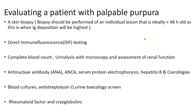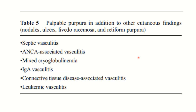To evaluate a patient presenting with palpable purpura: a skin biopsy with direct immunofluorescence (DIF) is a must, along with a complete blood count, urinalysis and microscopy, ANCA, ANA, serum protein electrophoresis, HBV/HCV serology, blood cultures, rheumatoid factor, and cryoglobulins. It is important to rule out additional cutaneous findings like nodules, ulcers, livedo racemosa, and retiform purpura, as these point toward septic vasculitis, ANCA-associated vasculitis, cryoglobulinemia, IgA vasculitis, and leukocytoclastic vasculitis.